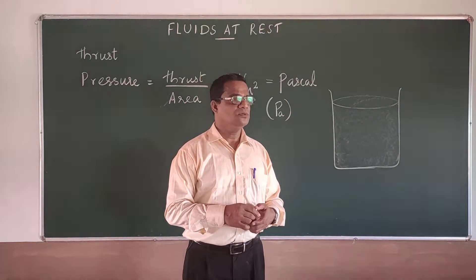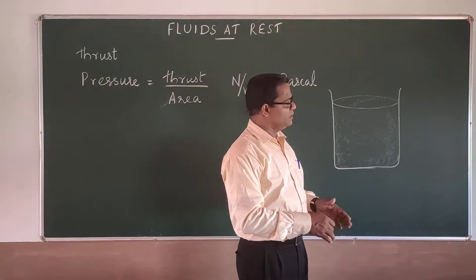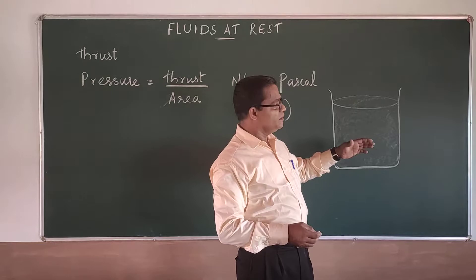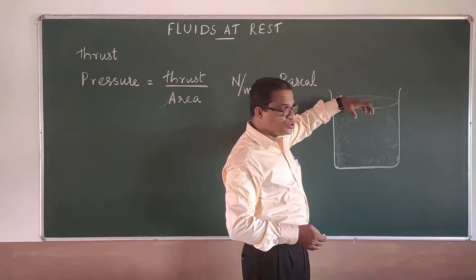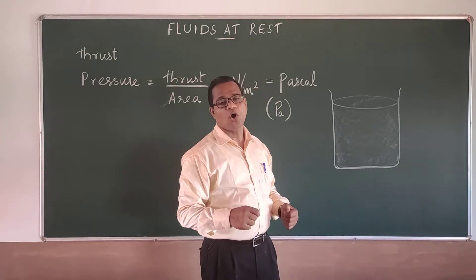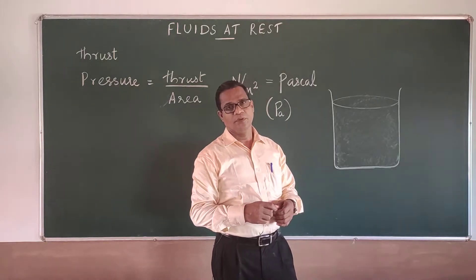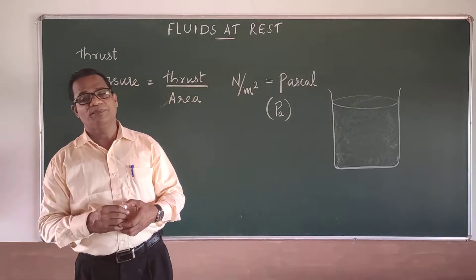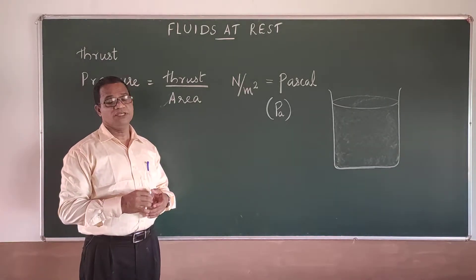If I consider this liquid column at rest, due to this liquid column, there will be a pressure exerted on the bottom surface. That pressure is actually the normal force acting due to the liquid column, and that normal force will in turn depend on the weight of the liquid in the container. So we will discuss the effect of gravity on the pressure of the liquid column.